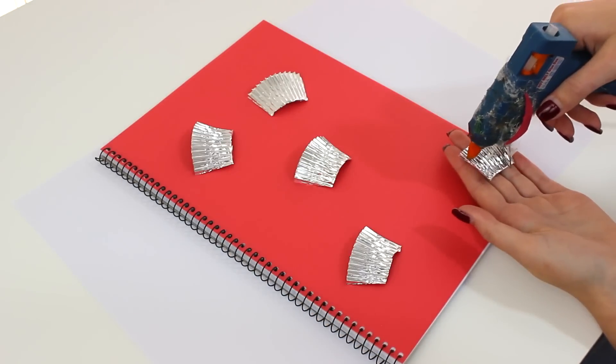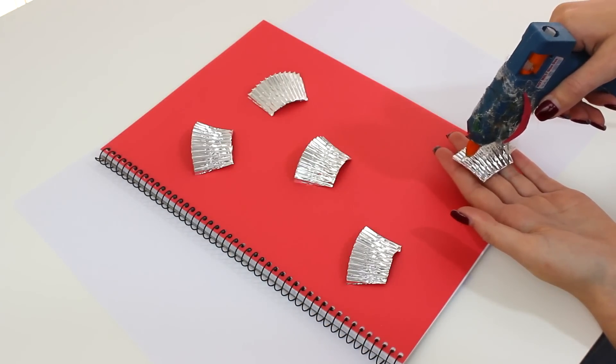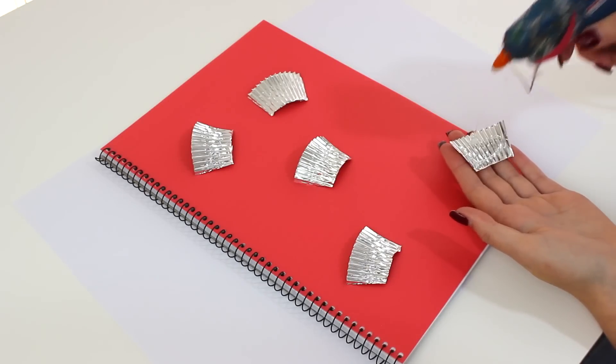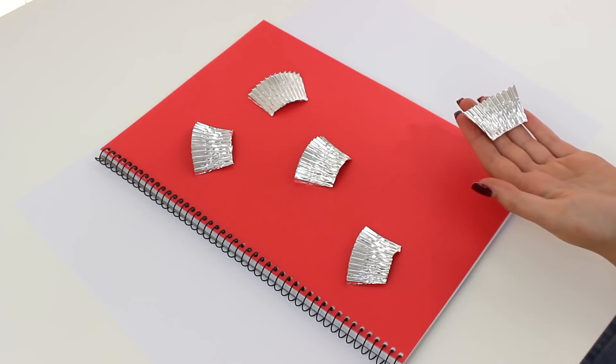And then lay them out. Tip number one: lay them out, have them perfect, and then decide you're going to glue it. I laid five out, then glued one down, then realized they weren't going to all fit.